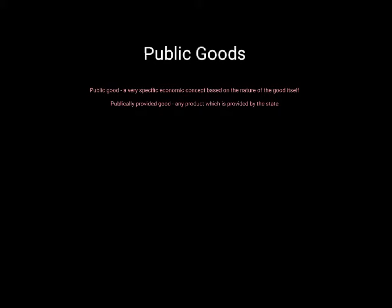The next video in this little series on market failures is public goods. The first and most important thing to get across is that there is a big difference between a public good and a publicly provided good. A true public good is a very specific economic concept based on the nature of the good itself. A publicly provided good is any product provided by the state — that's a really important distinction. Many candidates talk about a public good when referring to things like healthcare or education, and that's not correct.